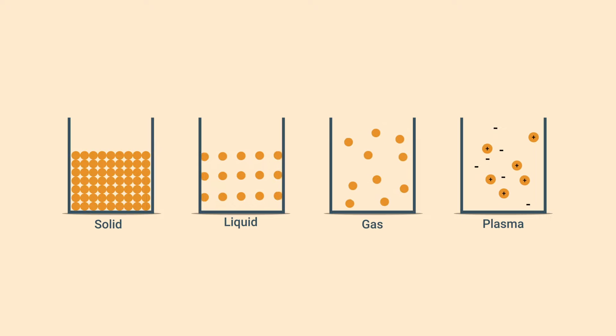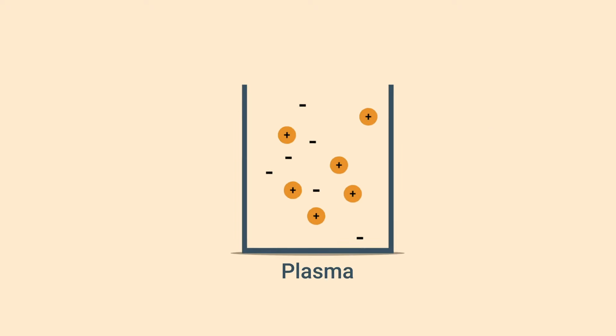A plasma is a gas in which all the atoms have had some or all of the electrons removed, leaving them as positive ions.